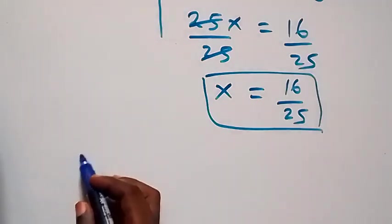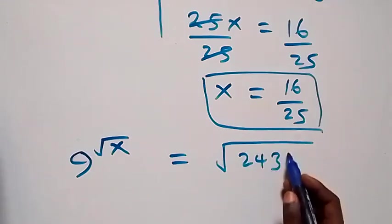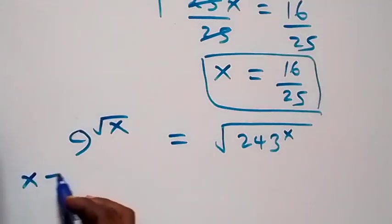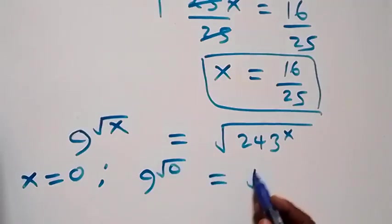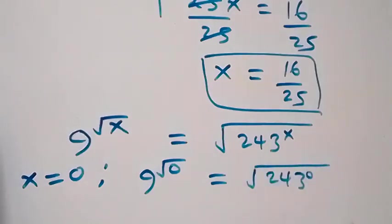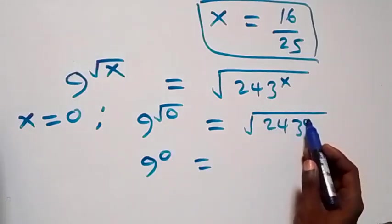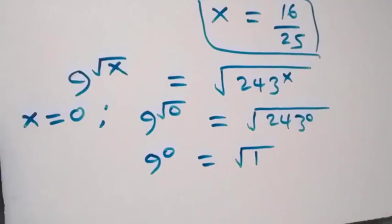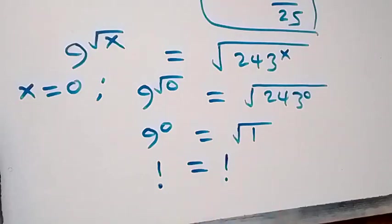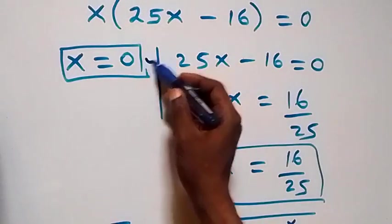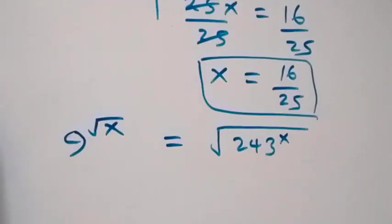The original equation is 9 raised to power root x equals the square root of 243 raised to power x. When x equals 0, we have 9 raised to power root 0 equals root of 243 raised to power 0. Root 0 is 0, so 9 to power 0 is 1, and 243 to power 0 is 1, so root 1 equals 1. Left hand side equals right hand side, so x equals 0 satisfies the equation.